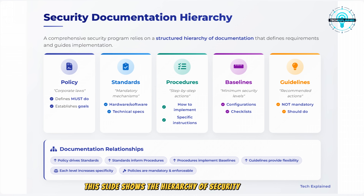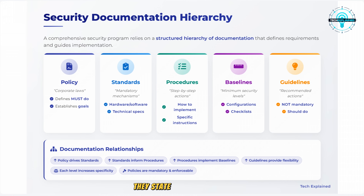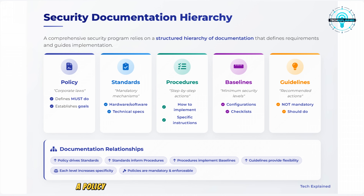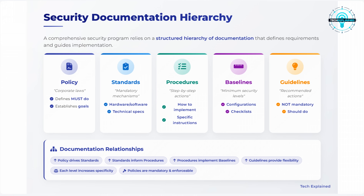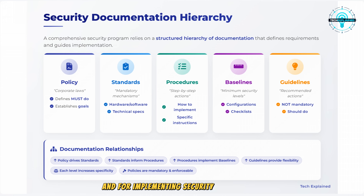This slide shows the hierarchy of security documentation, like the legal framework for your security program. Policies are like laws — they state what people must do, high level and mandatory. Standards are more specific, like building codes that specify exactly how things must be done; for example, a policy might say all systems must have antivirus protection, while a standard specifies which antivirus software to use. Procedures are the step-by-step instructions — the how-to guides for installing and configuring that software. Baselines are the minimum security requirements, like a checklist of settings that must be applied. Guidelines are recommendations and best practices that are not mandatory but provide guidance.